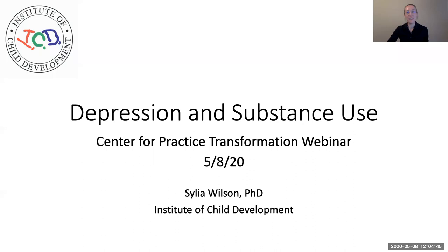Thank you so much, Joe and Peter, for having me. Thanks to everybody who is here today. I'm going to be talking today fairly broadly about depression and substance use. These are two of the most common forms of psychopathology. They collectively affect about 50 million people each year in the United States alone — and that's people who are directly affected by the disorders, not including their family members, children, friends, co-workers, or all of the other people who are indirectly affected by them.